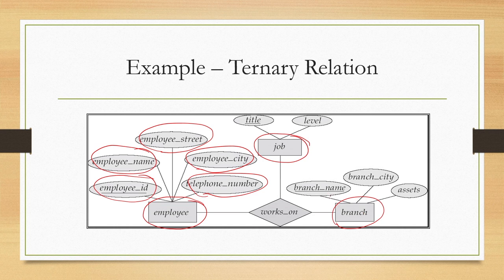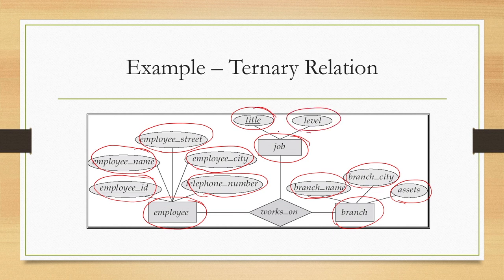The branch entity has attributes like name of the branch, city in which the branch is located, and total assets in the branch. The job entity has attributes like title and level of the job. Between these three entities we can define a relationship 'works on' — the employee works on the branch and has this particular job. Since three entities are associated with this relationship, it has degree 3 or it is a ternary relationship. But generally such relationships are rare; relationships of degree 2 are more common.